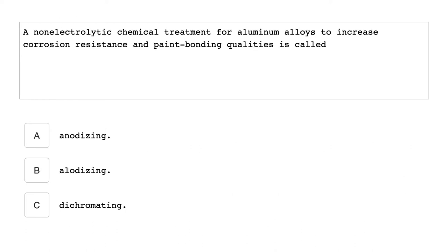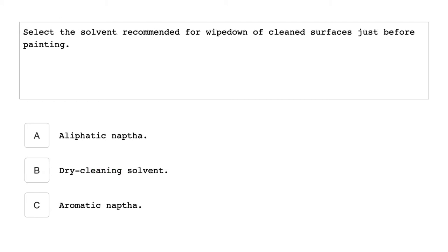A non-electrolytic chemical treatment for aluminum alloys to increase corrosion resistance and paint bonding qualities is called Alodizing.